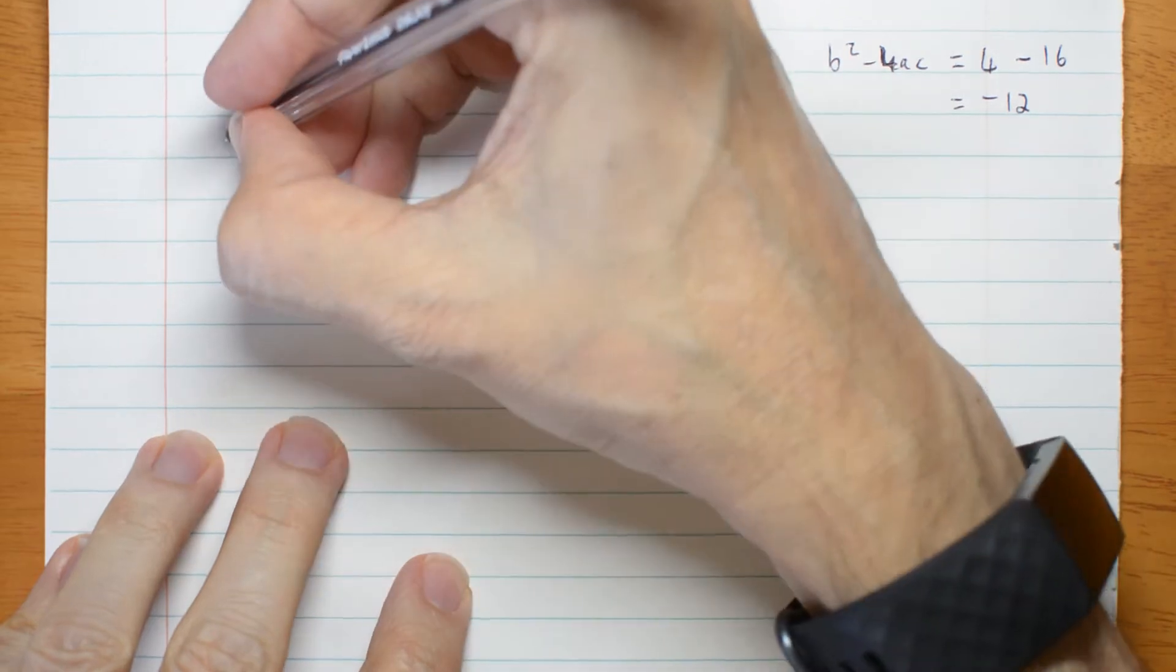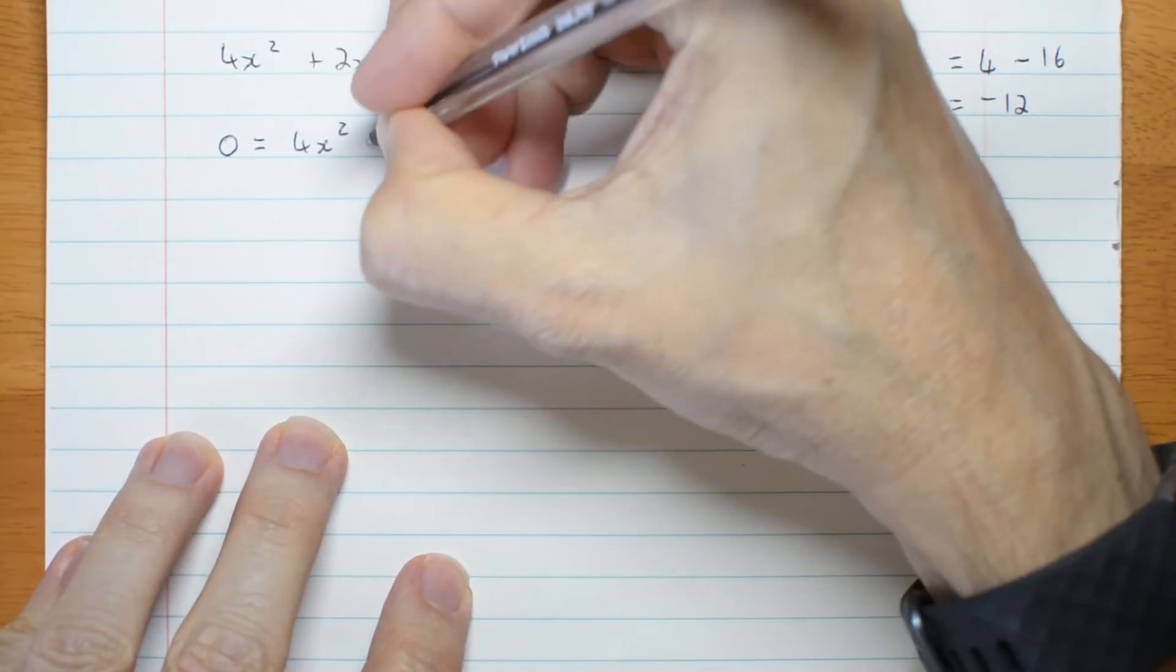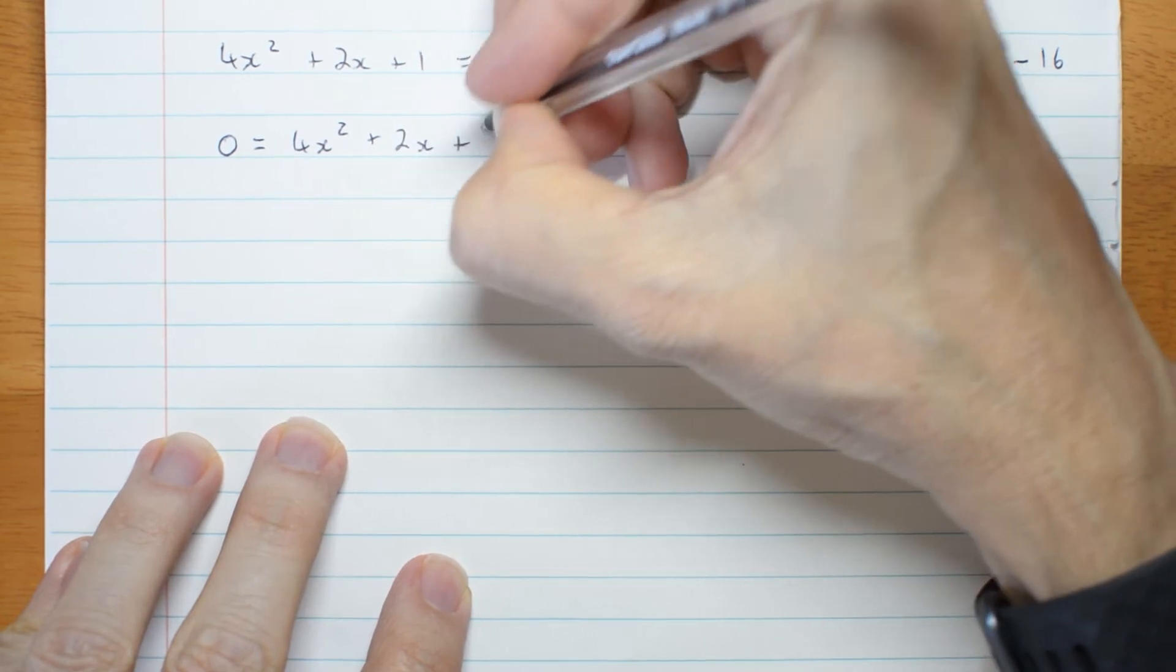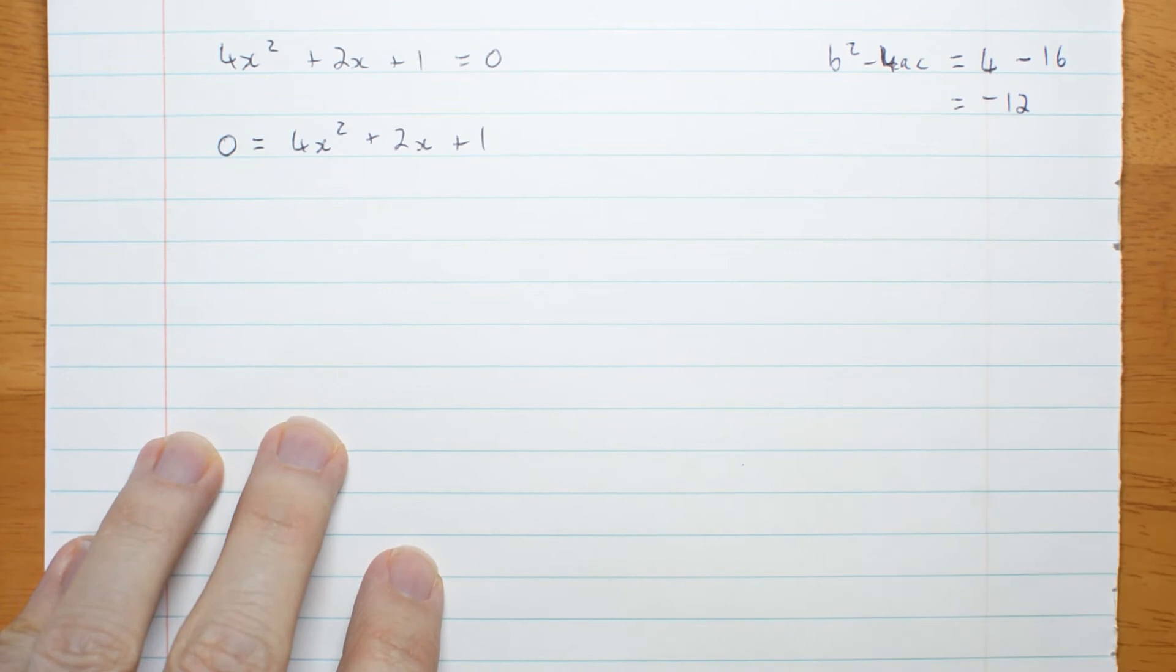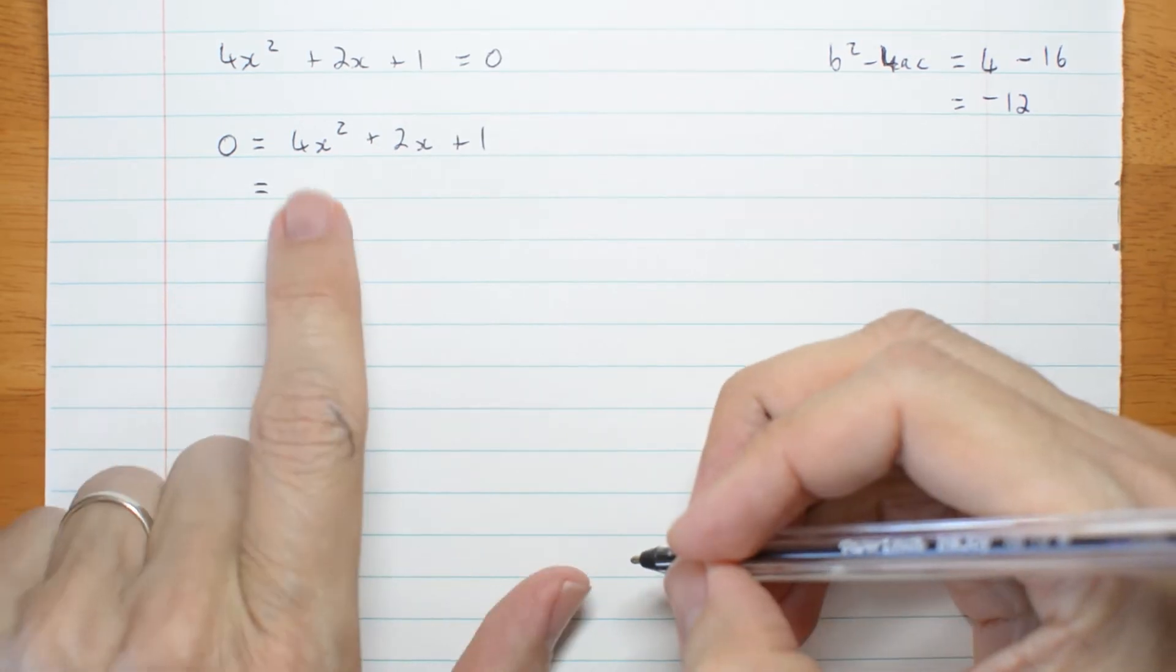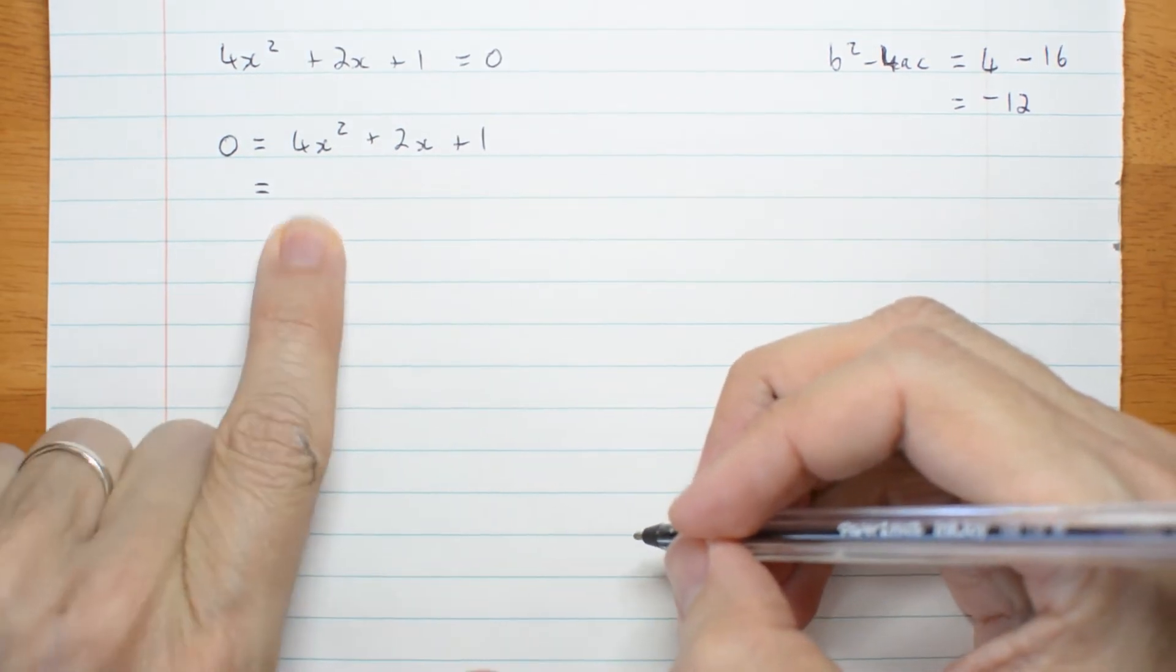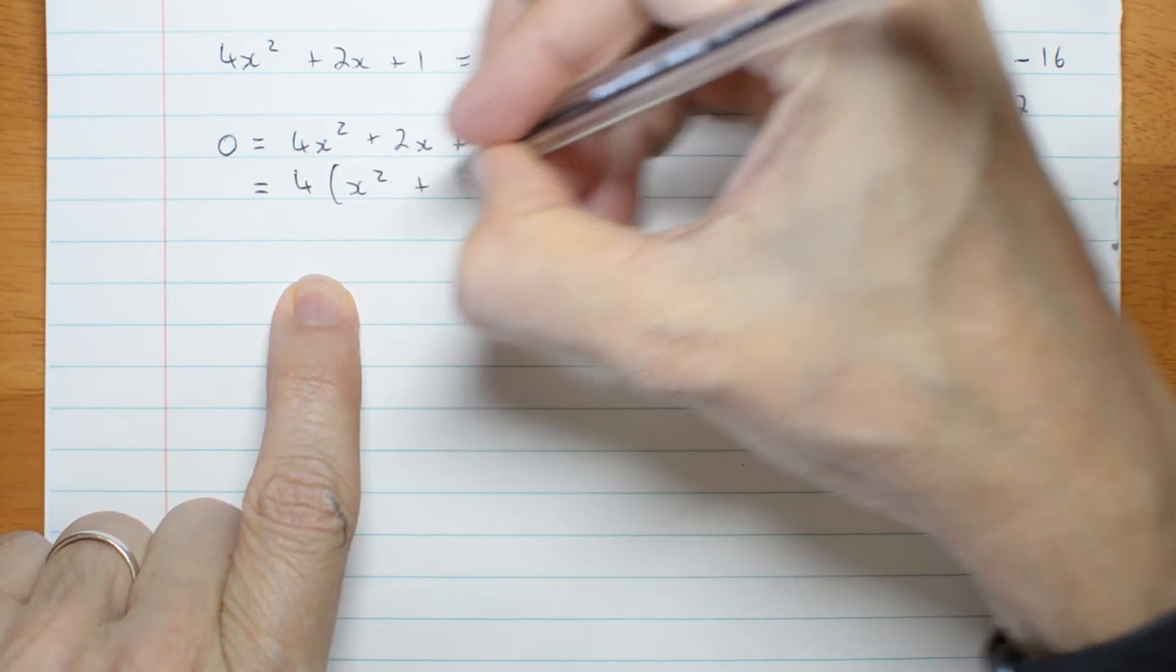As I always do, I'm going to write the zero on the left because it makes it neater for what's coming next. I can stop writing equals zero and making sure I line up and leaving enough space, it's just simpler to start with the zero on the left. First take out the factor of 4. Make it monic so I can complete the square.